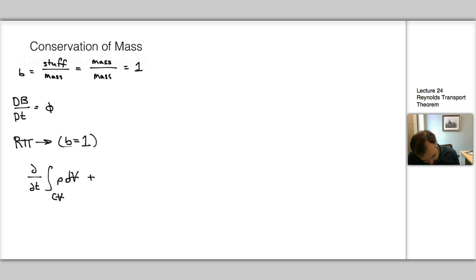Plus the integral over the control surface of rho V dot dA is equal to zero. And this is Munson, this is equation 5.5 in Munson.